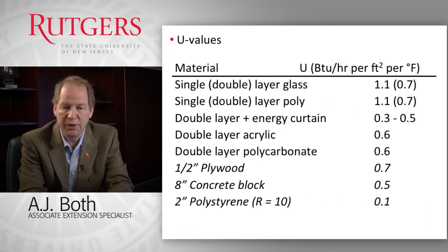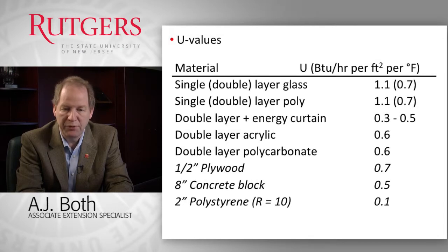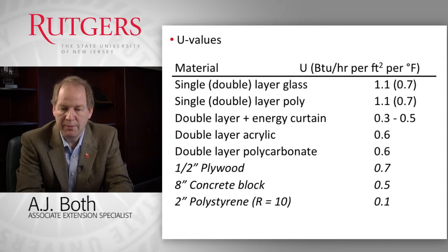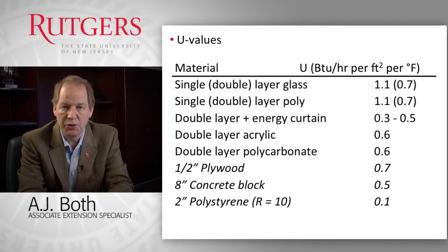The U-value for materials involved can be found in a table showing values for different covering materials — glass, polyethylene plastic film (single or double layer), energy curtains, acrylic, or polycarbonate. You look up the appropriate U-value for your material and plug it into the equation to calculate the structural heat loss.